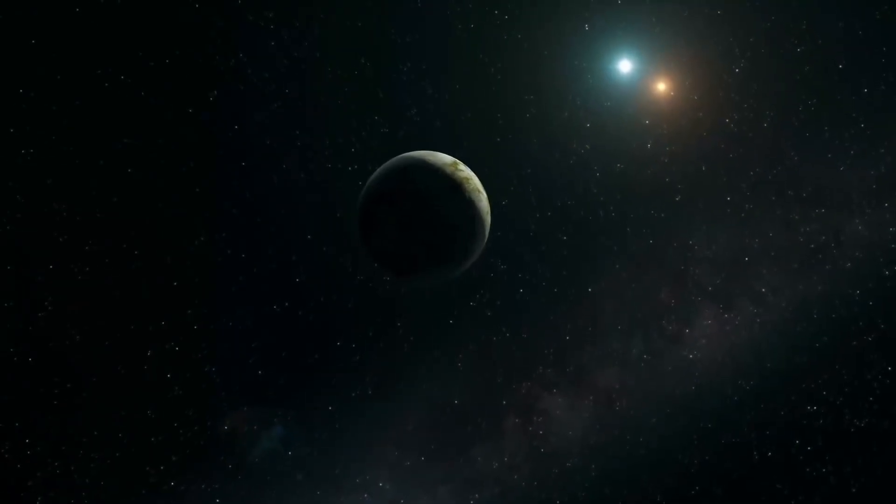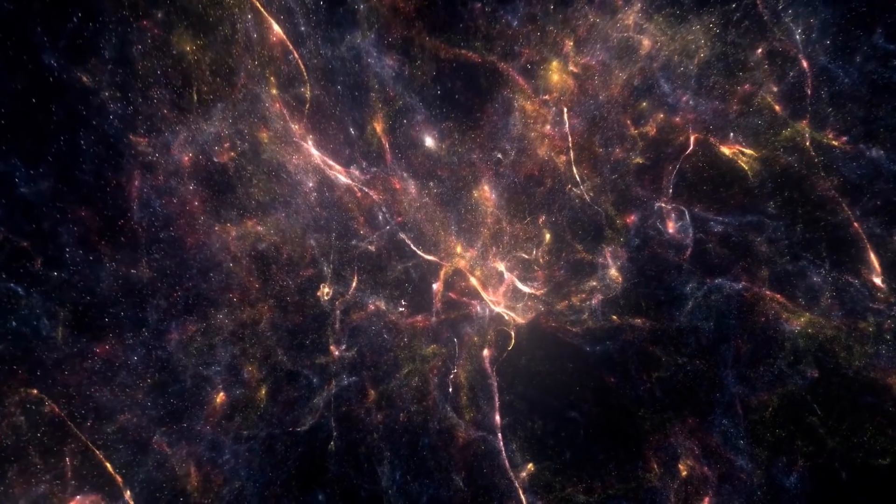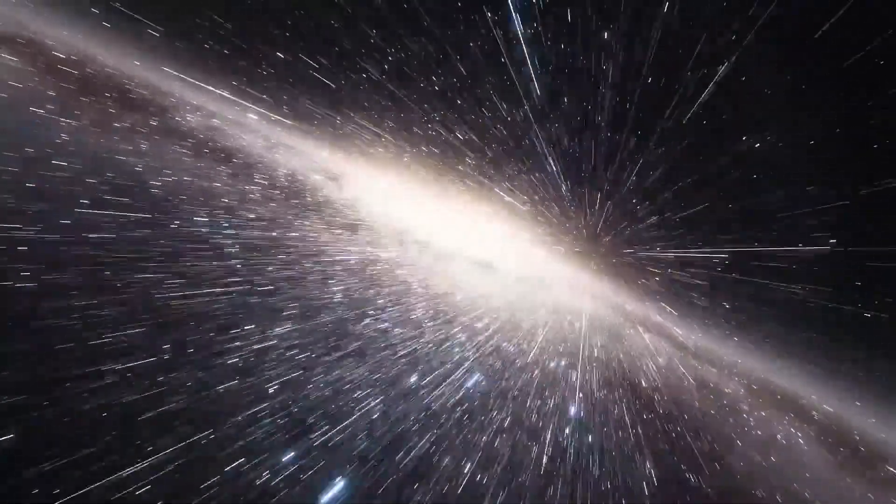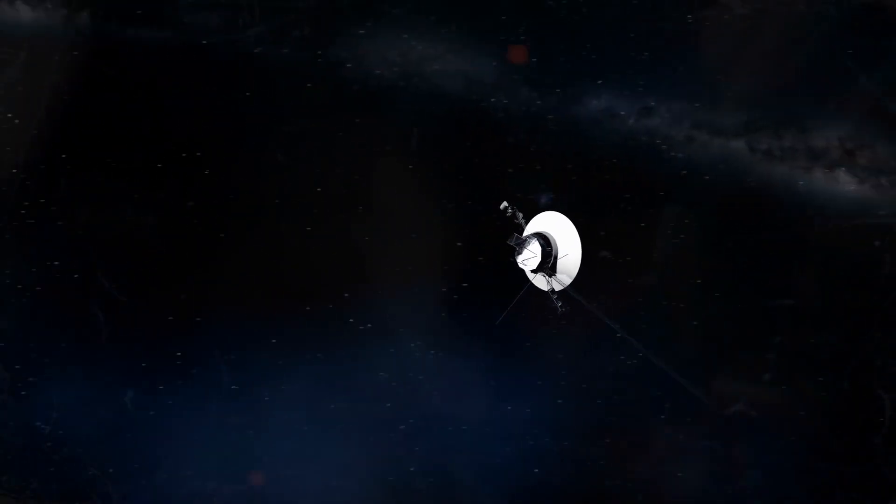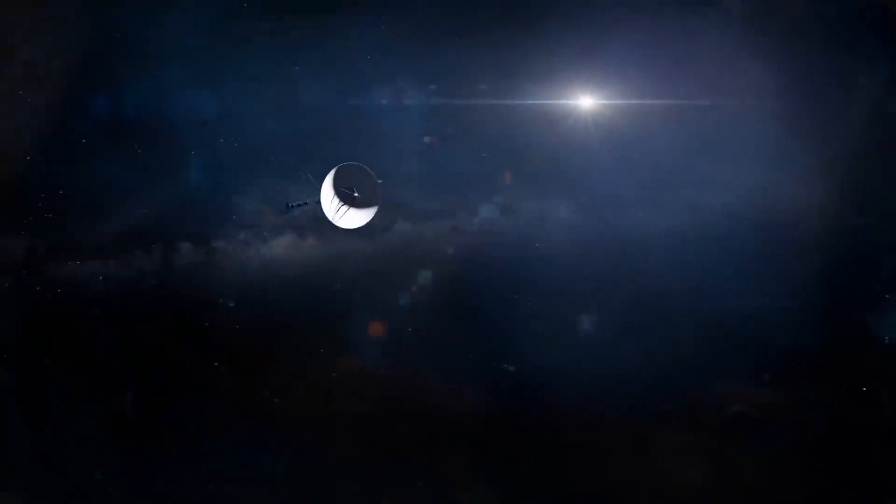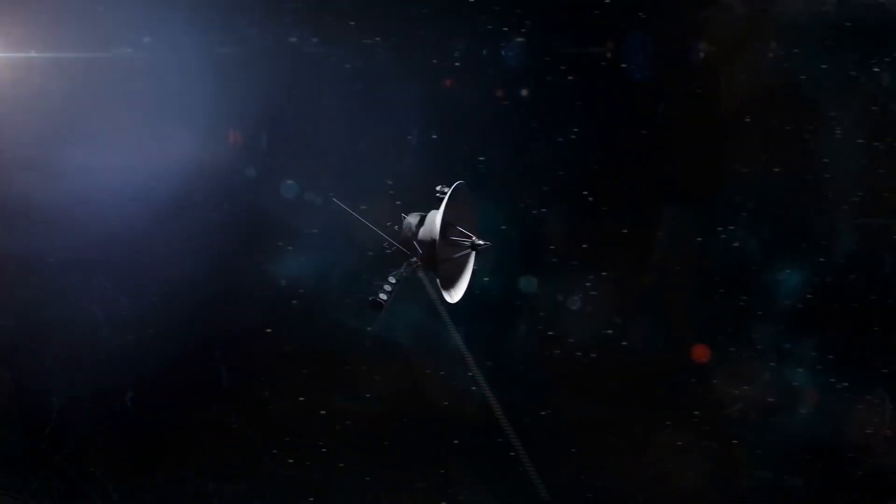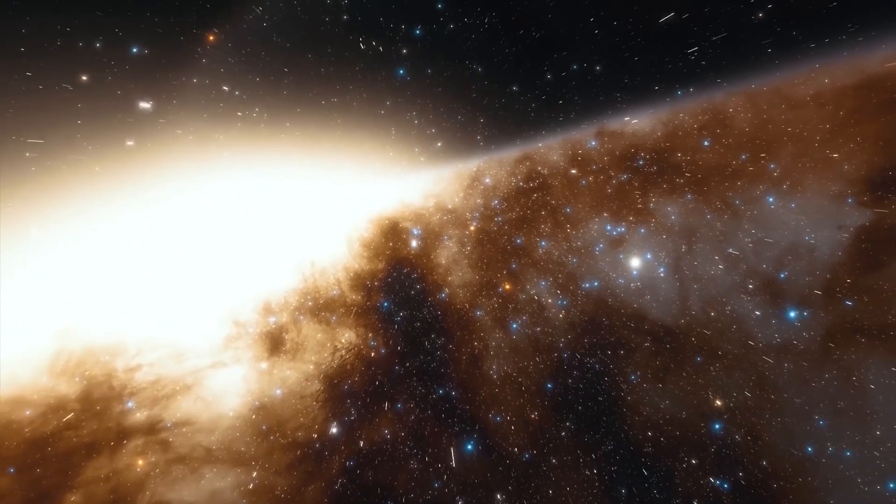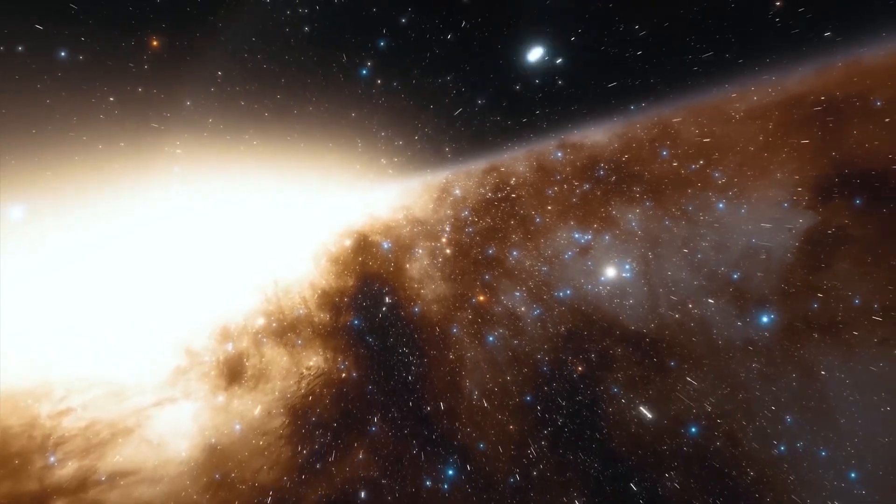Until the nature of the issue is better understood, the team cannot anticipate whether this might affect how long the spacecraft can collect and transmit science data. Voyager 1 is currently 14.5 billion miles from Earth, and it takes light 20 hours and 33 minutes to travel that distance. That means it takes roughly two days to send a message to Voyager 1 and get a response.